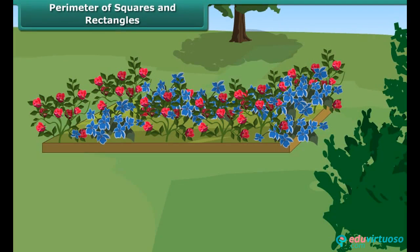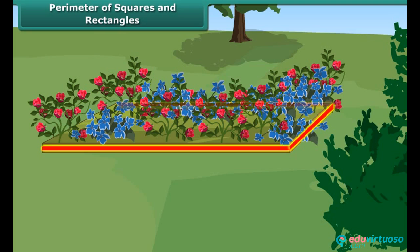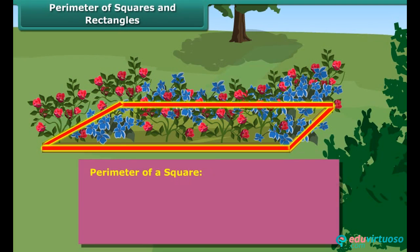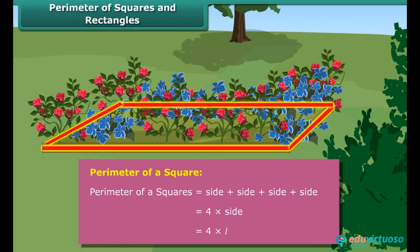Perimeter of squares and rectangles. Students, can you measure the boundary of the flower bed in the park? Yes, by measuring the sides of the flower bed. So, the perimeter of a shape is the outer boundary of the shape. The perimeter of a square is the sum of the sides of the square.